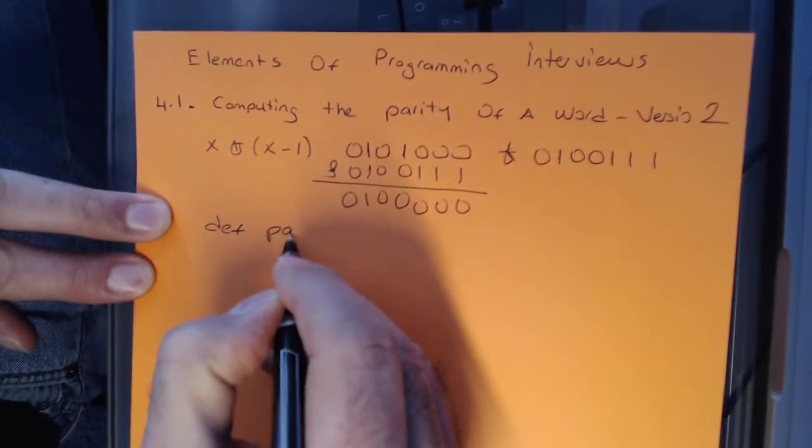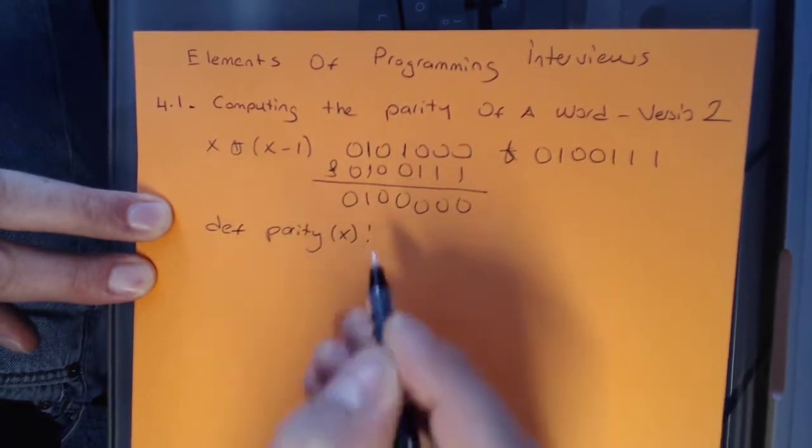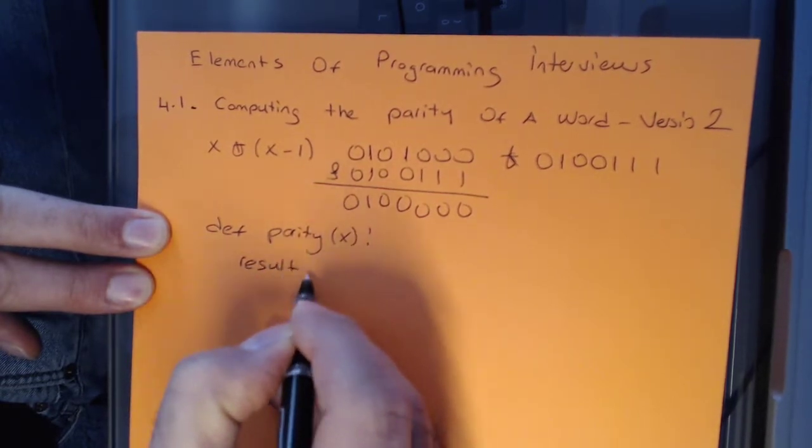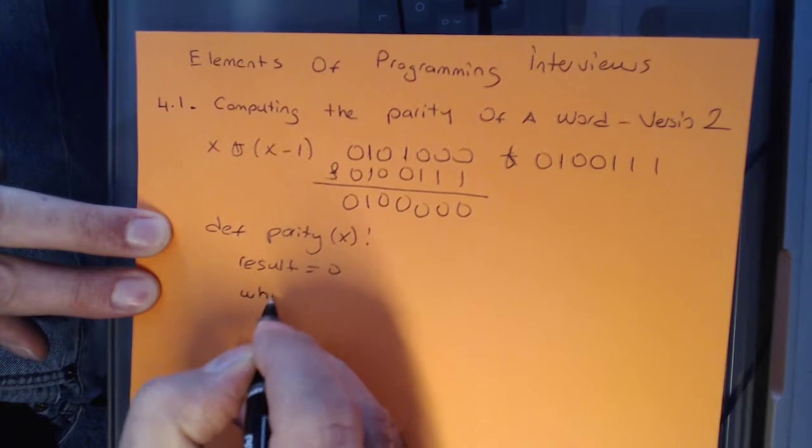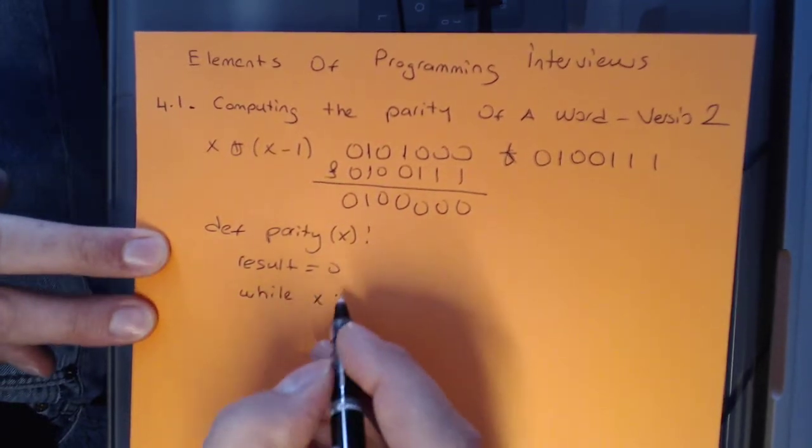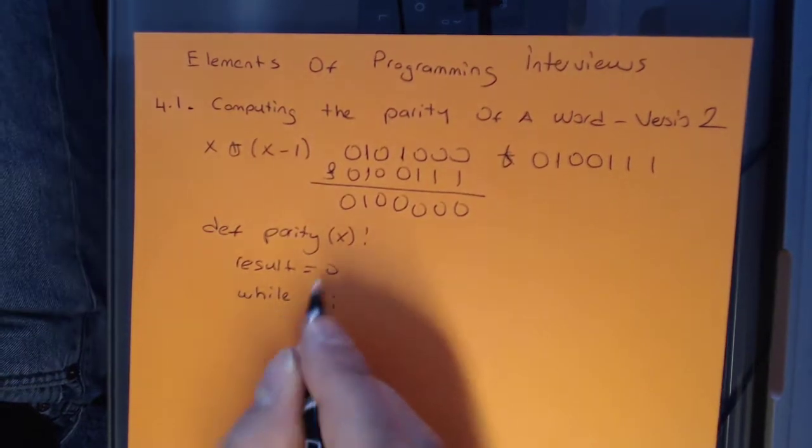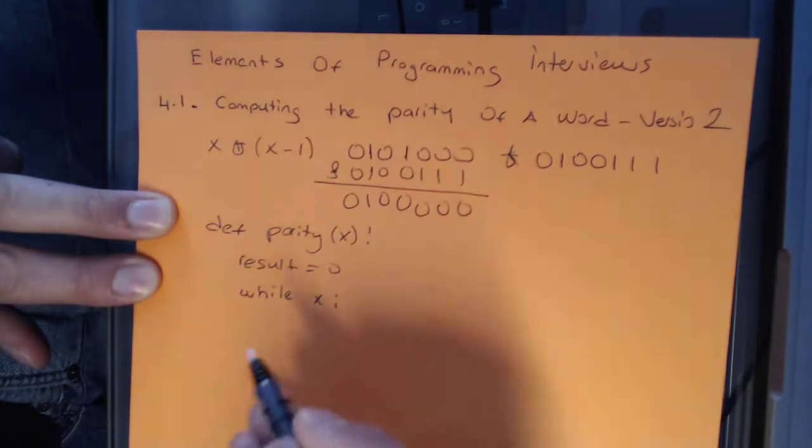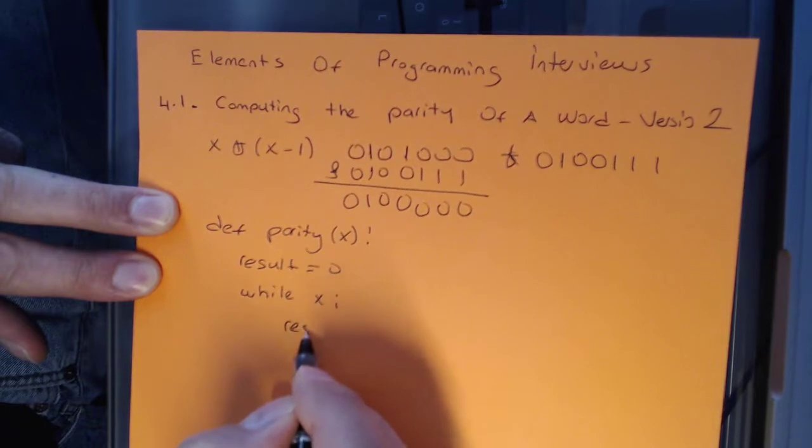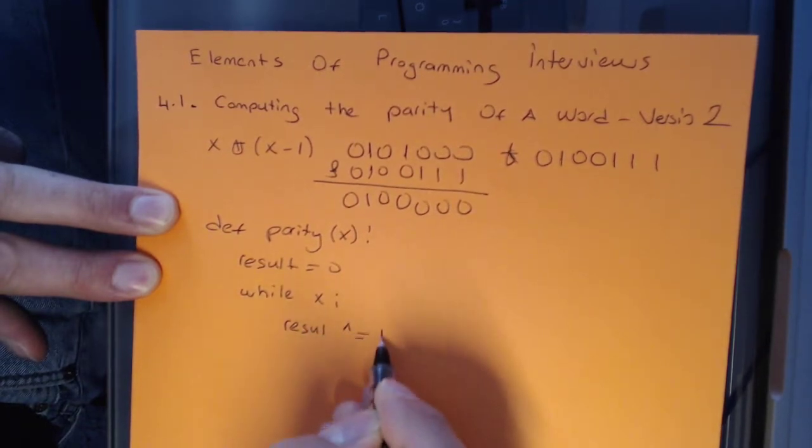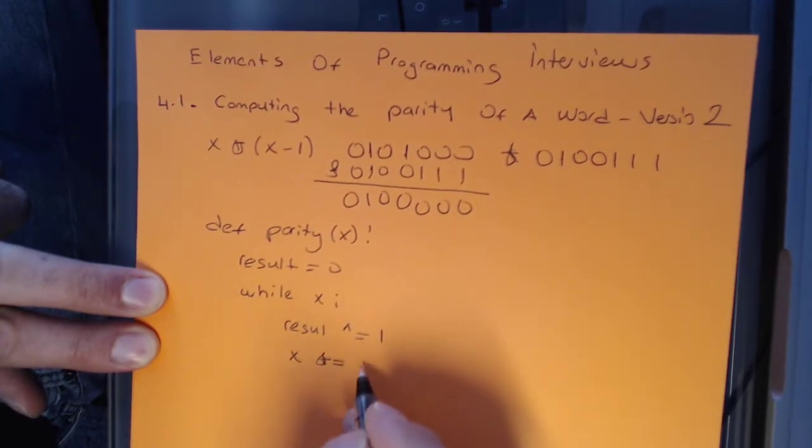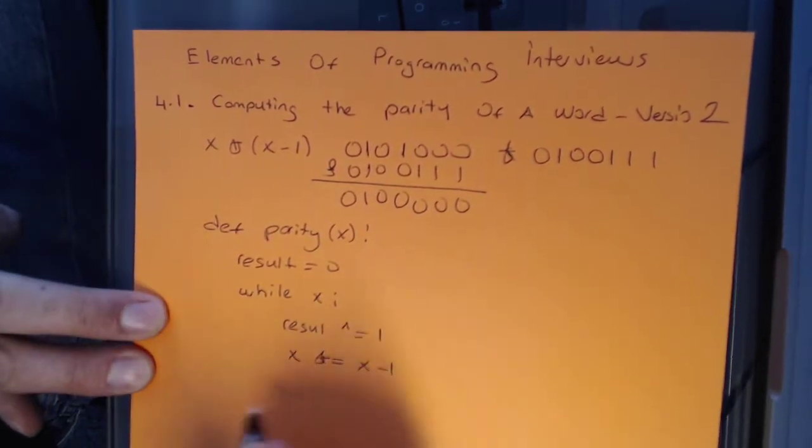You're still calculating the result as the previous solution, which is going to be set to 0, and we're going to iterate through X as we did before. Because of the fact that we are unsetting the set bit as we iterate through, in each iteration we can just basically take the result, XOR it with 1, and erase the lowest set bit of X. So we basically take X and AND it with X minus 1, and then return result.